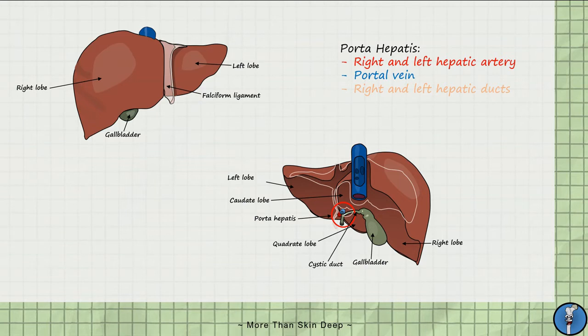Here is the posterior continuation of the ligamentum teres, known as the ligamentum venosum. Together with the falciform ligaments anteriorly, the ligamentum venosum forms the right and left coronary ligaments laterally. These ligaments then form the left and right triangular ligaments, which is then continuous with the peritoneum of the diaphragm superiorly.